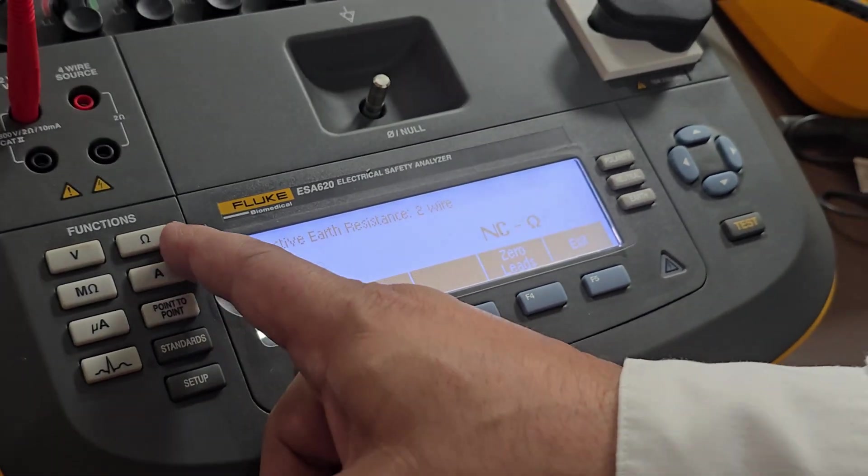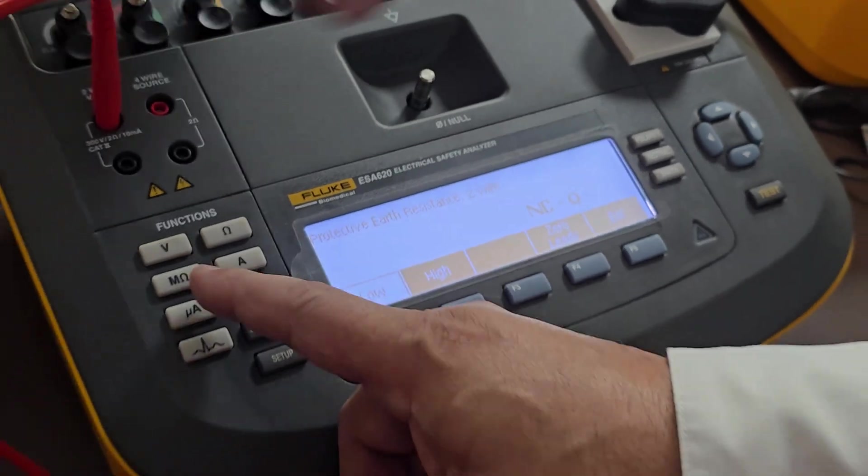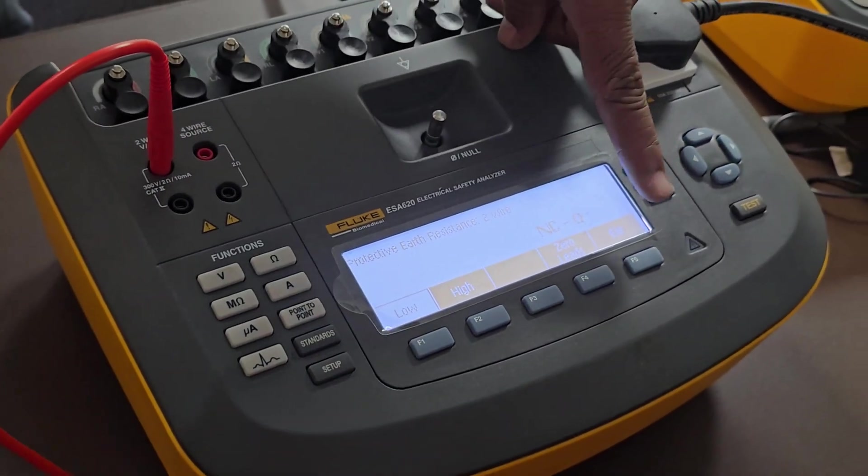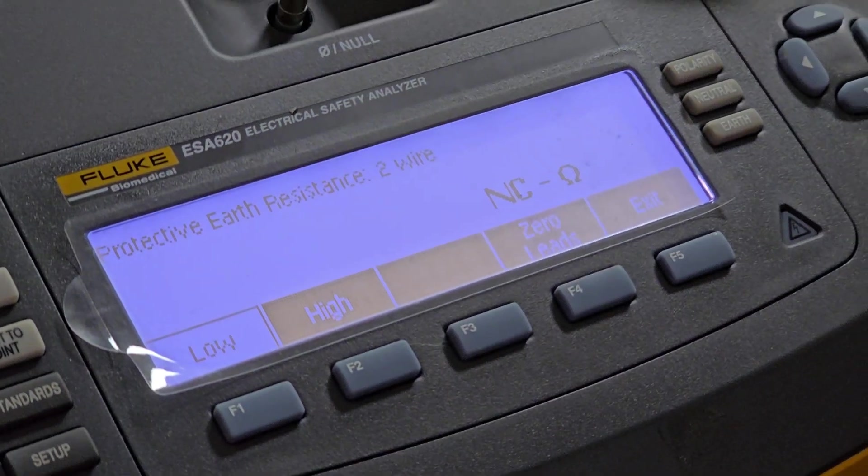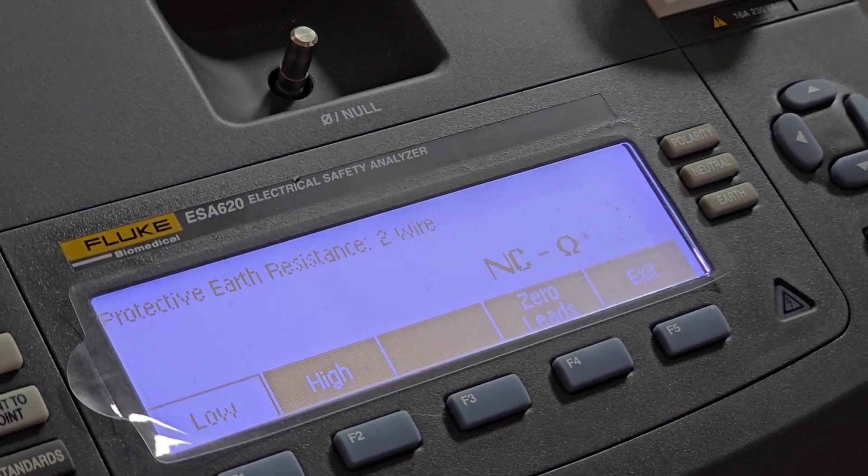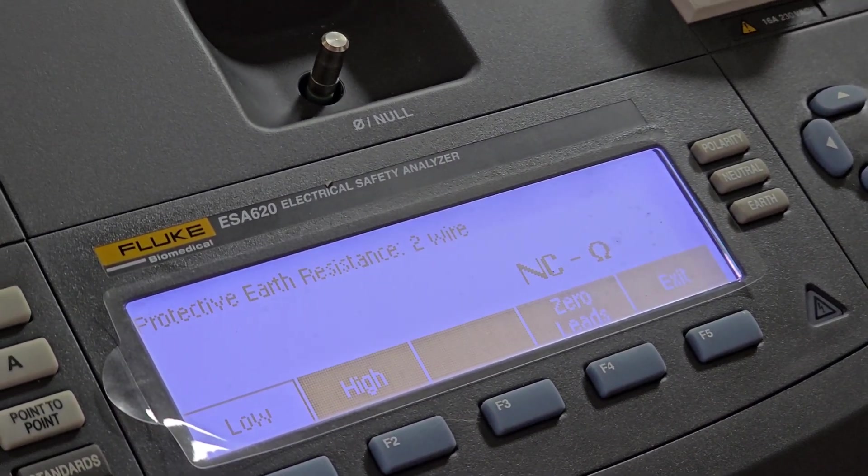Then let us do this one. This is resistance. See, here when you have to do resistance, you have to zero the leads this way. Why actually it has to be done? Zeroing has to be done. It is like offset.